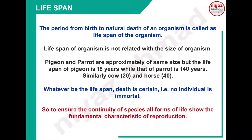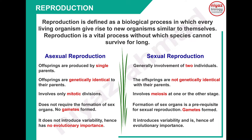Here comes the definition of reproduction. It is defined as a biological process in which every living organism gives rise to new organisms similar to themselves. ہر ایک living organism اپنے ہی جیسا ایک نیا organism بناتا ہے for the continuity of species. Reproduction is a vital process without which species cannot survive for long - کیونکہ اگر reproduction نہیں ہوگا تو members ایک نہ ایک دن ختم ہو جائیں گے اور species extinct ہو جائے گی۔